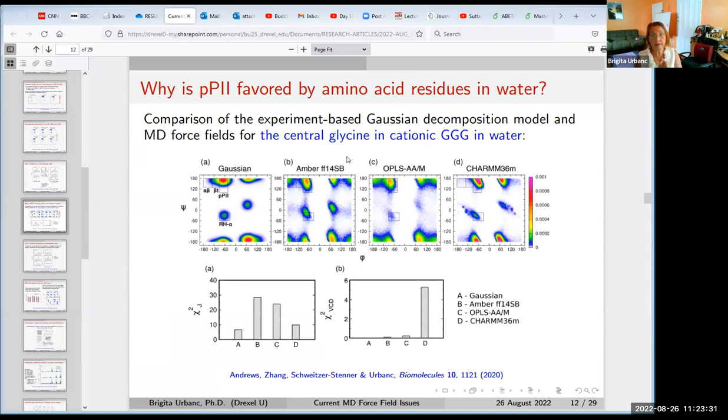There are two issues. First is that molecular dynamics force fields don't perform well even for alanine, which is the simplest chiral residue. But the other question is, why is PP2 conformation favored by most amino acid residues in water? Alanine has the highest amount, but Reinhard Schweitzer-Stenner's group has produced data for many amino acid residues, and most of them, PP2 dominates. So why is that?